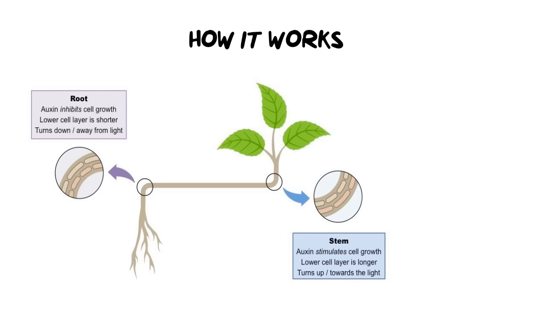Now let's go into how does this actually work and I just want to recap what happens in the stem and the root because they are different and we need to build upon what we've learned in phototropism. So we'll start with the stem. Now the stem has auxins in it, the hormone, but it responds differently to what happens in the root.